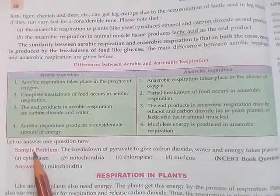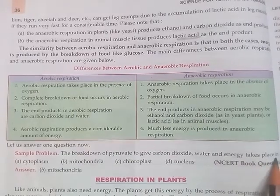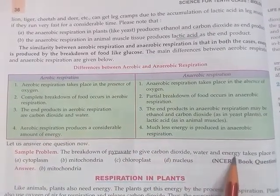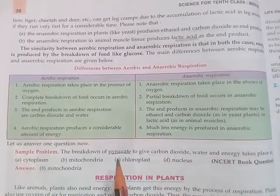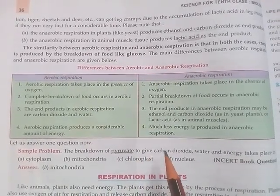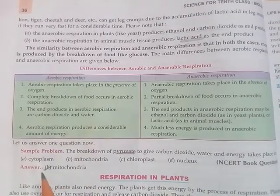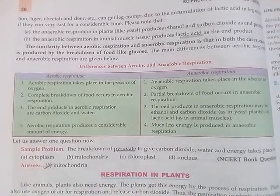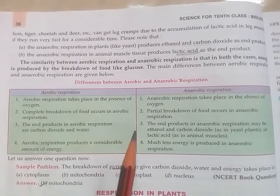Here is a sample problem: 'The breakdown of pyruvate to give carbon dioxide, water and energy takes place in...' Pyruvate breakdown producing CO2, water and energy happens in aerobic respiration, which is the second step. Where does it take place? In the mitochondria. That is why we call the mitochondria the powerhouse of the cell — because energy is released there. So students, read this topic properly and maintain your notes.